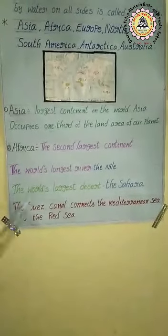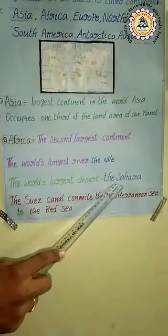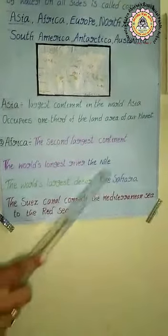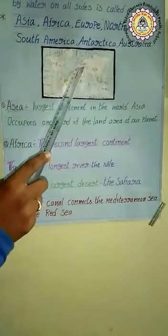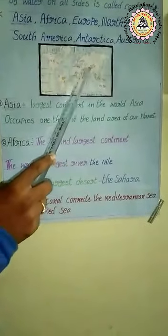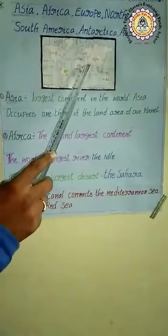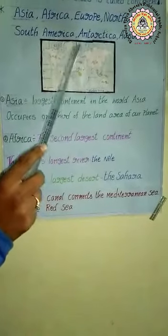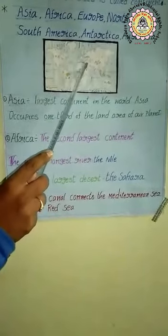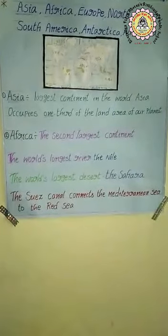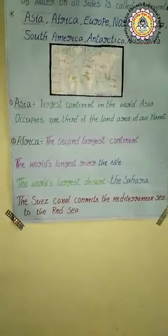One more important feature about Africa: the world's largest desert, that is the Sahara. The Sahara desert is located in the north part of Africa. A large portion of the African continent is covered with the Sahara desert, that's why the Sahara desert is the world's largest desert.